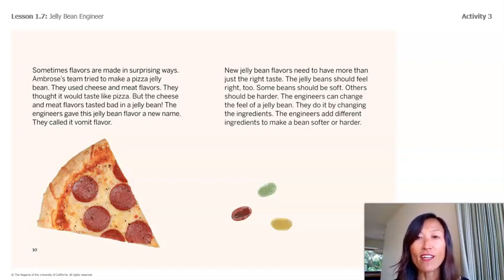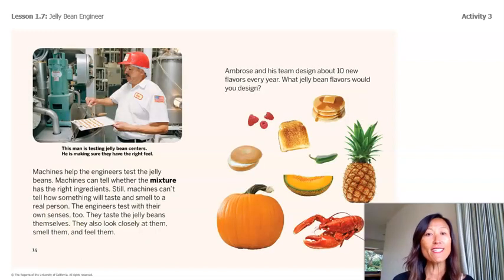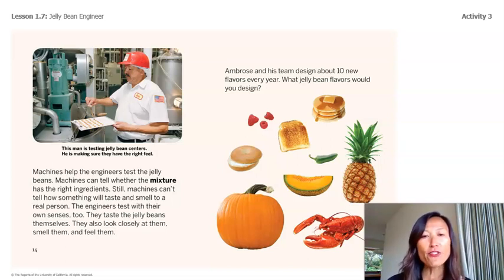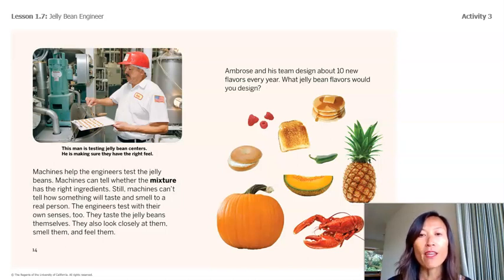Some jelly beans should be soft and others harder. The engineers can change the feel of a jelly bean by changing the ingredients — they add different ingredients to make a bean softer or harder. Machines help the engineers test the jelly beans to check whether the mixture has the right ingredients. Still, machines can't tell how something will taste or smell to a real person, so the engineers test with their own senses too — they look closely at them, smell them, and feel them.